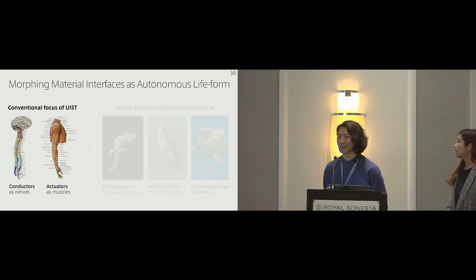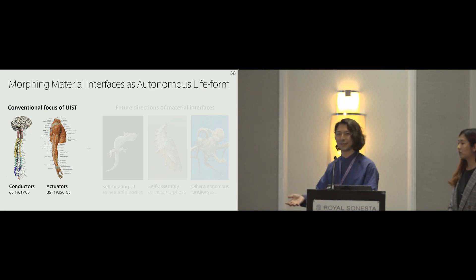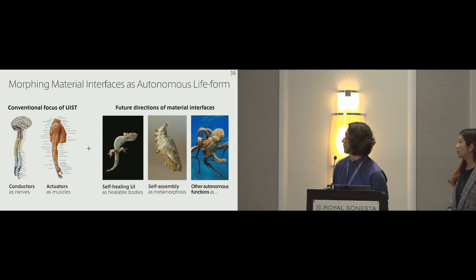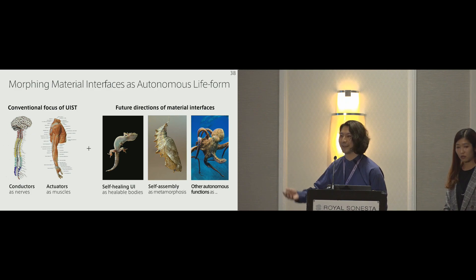I'd like to conclude this presentation with some visions of morphing material interfaces as autonomous life forms. Conventionally, people mainly focused on the sensors or conductors, which can sense the environment or think like brains or send information to your body as nerves or actuators as muscles of your body. But we further envision future directions of material interfaces as an autonomous thing, like self-healing UI works as a healable body, and self-assembly techniques work as a metaphor of metamorphosis, for example, from chrysalis or cocoon into the butterfly. Or we might be able to use some other autonomous functions with the material we do not have so far. We believe the interface system with some novel materials will drastically enrich and extend the current border of the interaction designs.